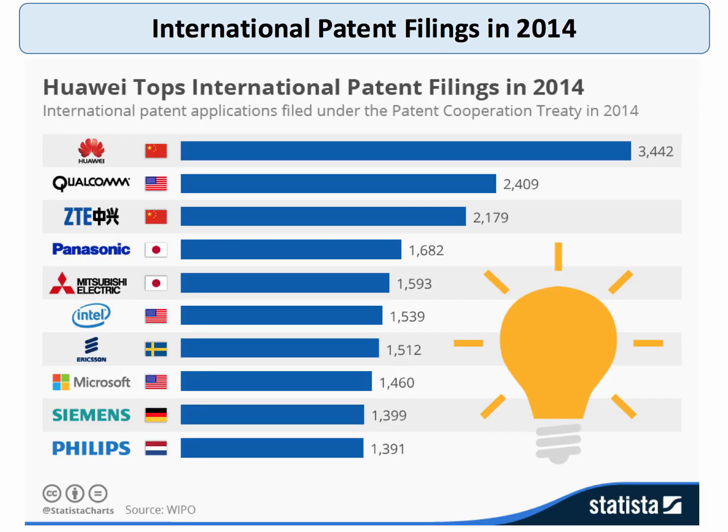Research and innovation are important. Looking at the top international companies filing patents in 2014, there isn't a British company among them. Huawei topped the patent filing list, with Panasonic, Mitsubishi, Intel, and Microsoft among the regular suspects. GlaxoSmithKline would be in the top 20, but we probably don't have enough British firms filing enough patents — and that's a reflection of our lack of research and development investment.